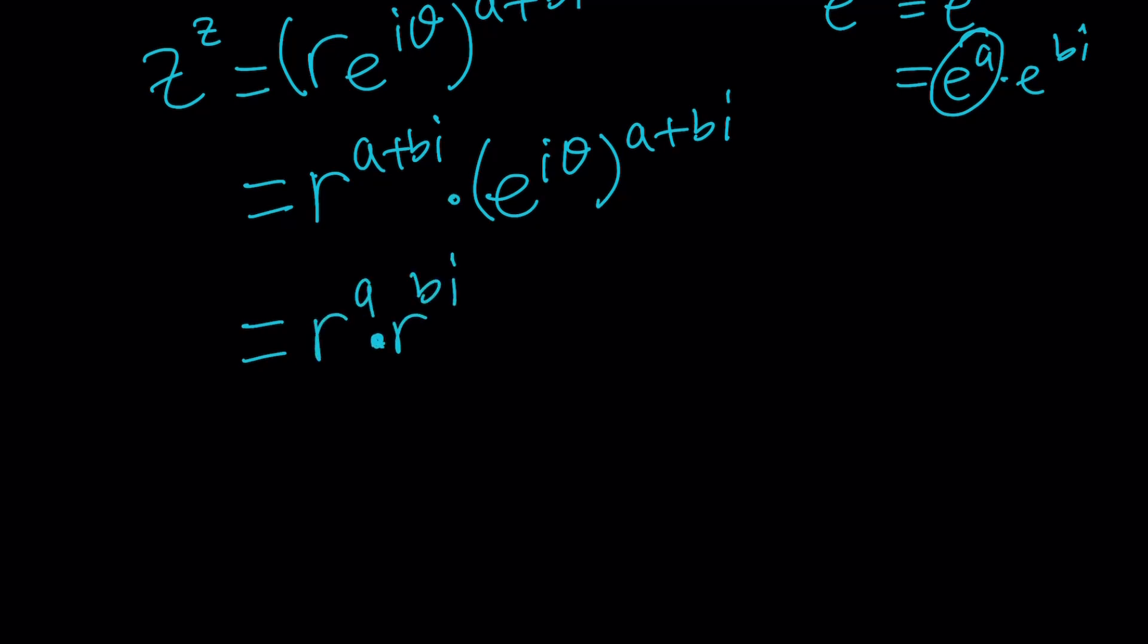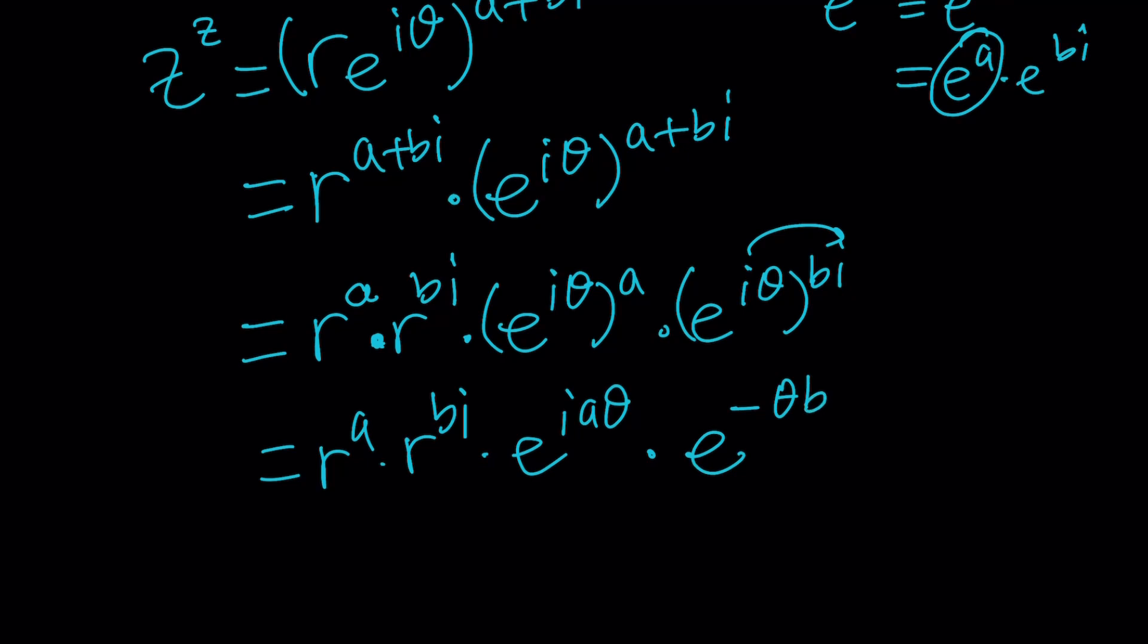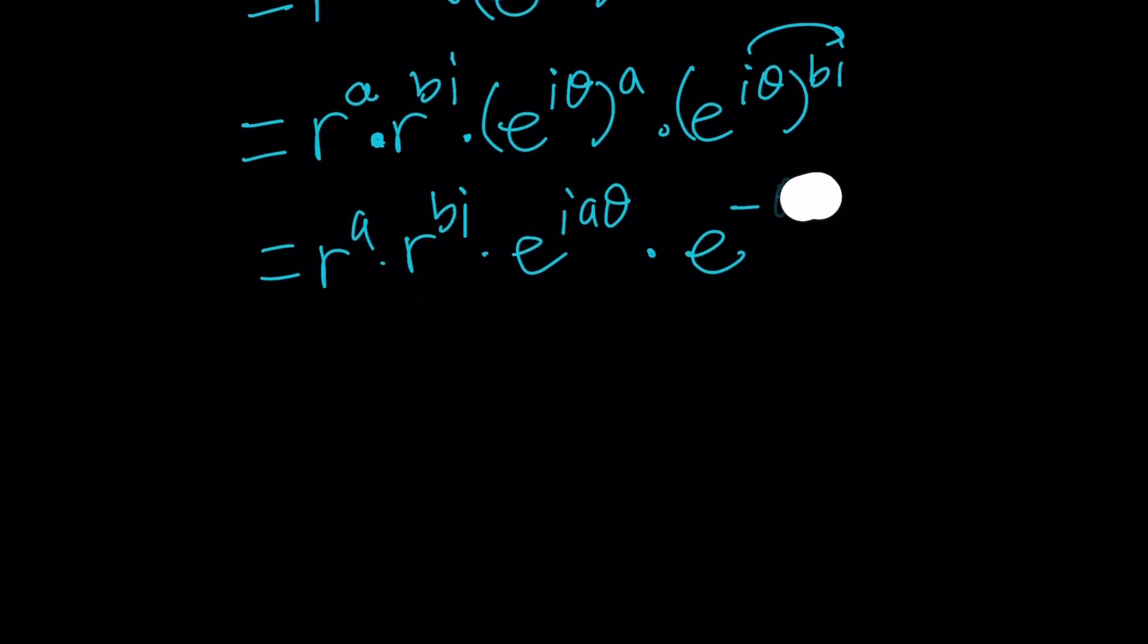So for this particular piece the modulus would be R to the power A, okay? Whatever A is. And then this part can actually be kind of distributed or you can write it this way. E to the I theta to the A times E to the I theta to the power B I. This will probably be a little easier. So then we're going to get R to the A, R to the B I, E to the I A theta and then here I times I is I squared which is negative one. So that's going to give you E to the power negative theta B or B theta. Whatever you want to write. I think B theta is probably going to look a little better. Let's do that because we have an A theta here, right? Cool.